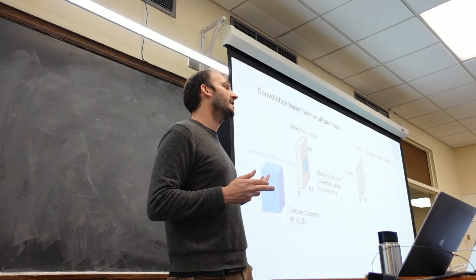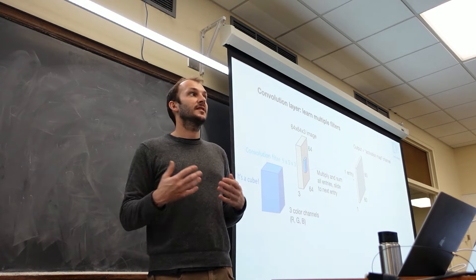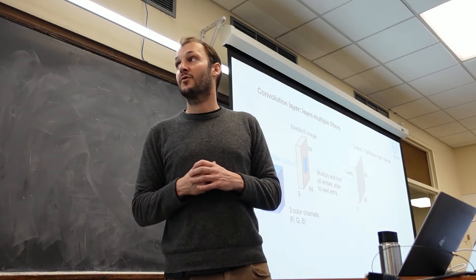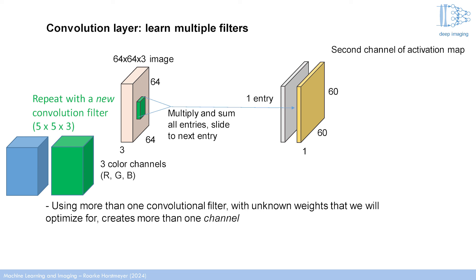Why three-dimensional filters? First, because you may have color images — you can account for those color channels using a three-dimensional set of weights instead of a two-dimensional one. More importantly, we will be creating additional channels. If you have two different convolutional filters you're optimizing for, the output of applying each of those filters individually to your image will be a separate result. How many channels you create is an architectural decision.